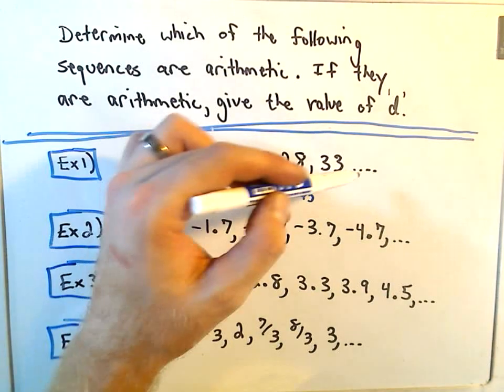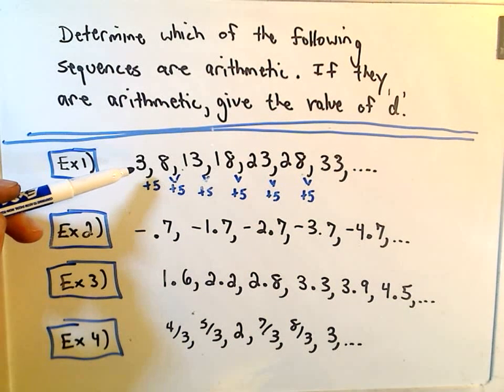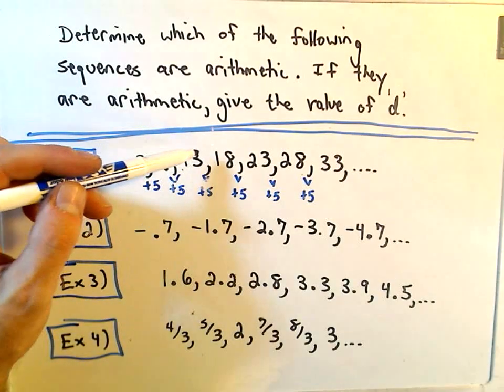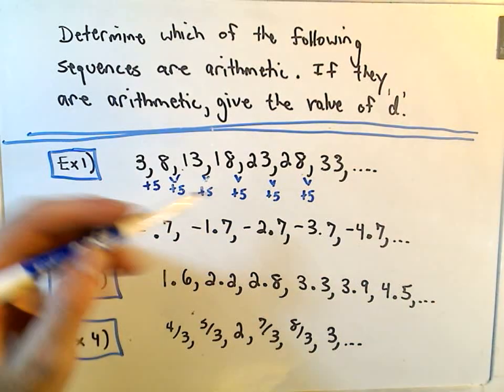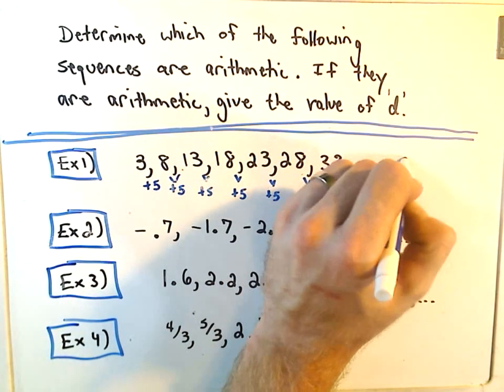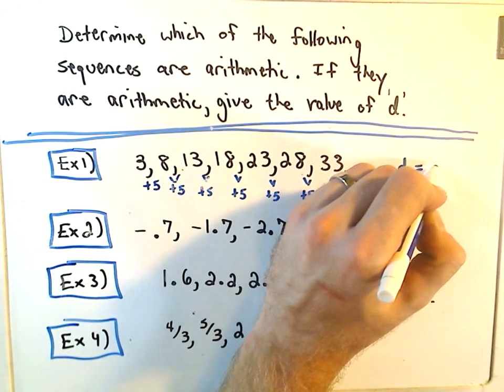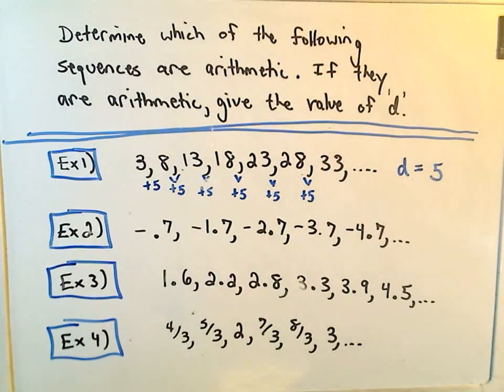And, you know, assumedly, if this pattern continues, well then it would certainly be what we call an arithmetic sequence. Because every term is differing by a constant amount. And this value that you have to add to get to the next term is going to be positive 5. So we say our d value is positive 5.